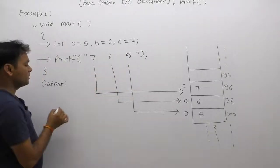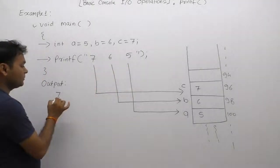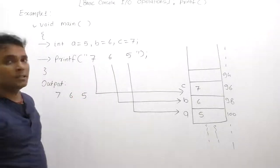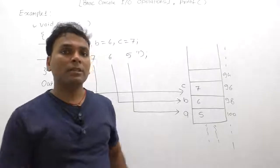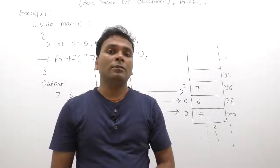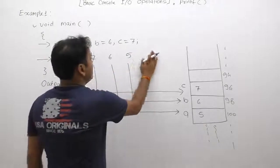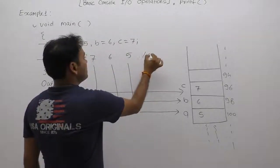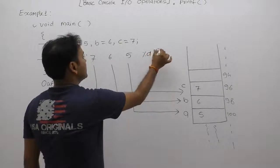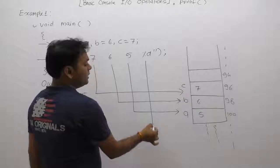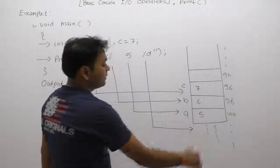Again we are exploring that example. What happens whenever we are supplying some more extra format specifiers? We are not able to observe the next top element in that case.